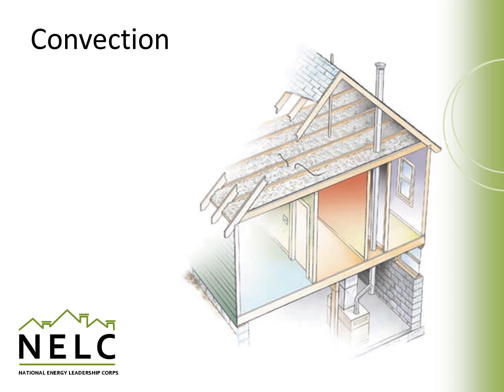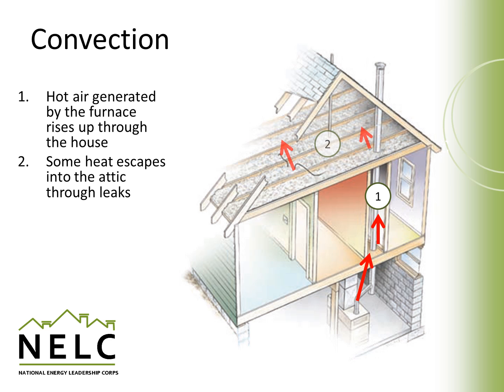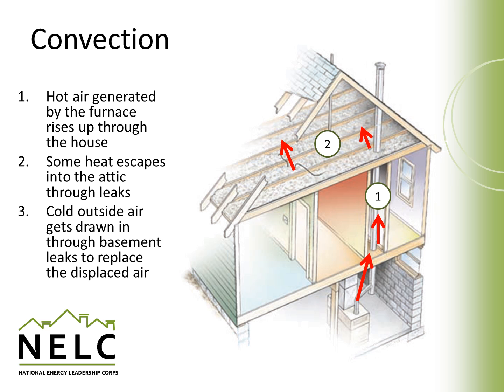Convection currents arise when warm air, such as heated air from a furnace, rises up to the upper floors of a home. Sometimes some of this air escapes into the attic through various types of leaks, and as this air exits the home, cold air ends up being sucked into the home to replace the displaced warm air.